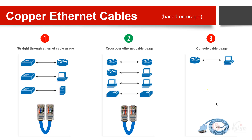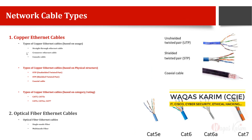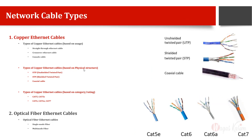We can also divide copper cables based on physical structure: UTP (Unshielded Twisted Pair), STP (Shielded Twisted Pair), and coaxial cable. STP is a bit more expensive but has an extra shield for interference protection. Coaxial cable is used for analog communication and has a lot of shielding.